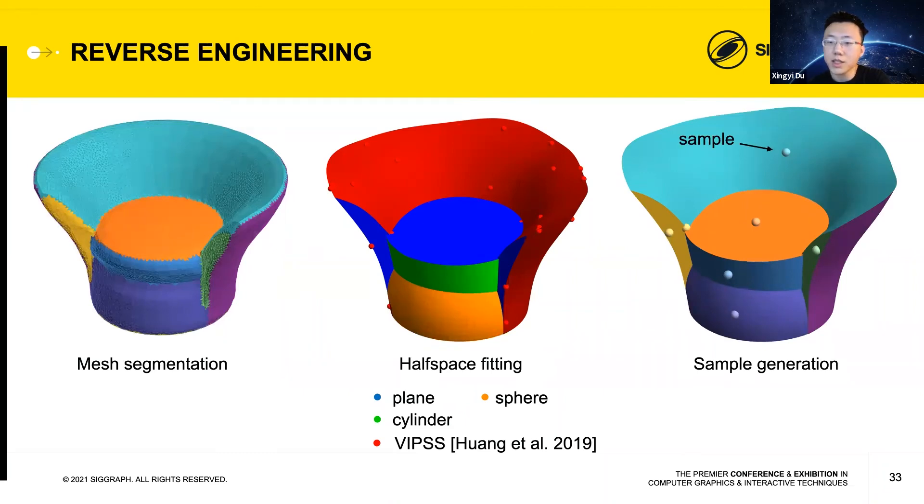If we compare this process with that for reverse engineering a CSG shape, both processes start with fitting half spaces to the mesh. However, BSH only needs to generate a sparse sample after that. But reverse engineering CSG would need to additionally solve an optimization problem that recovers the most plausible and easy-to-use boolean expression. This is usually the most challenging step in reverse engineering CSG, and the existing algorithms often fail to produce an editable boolean expression.